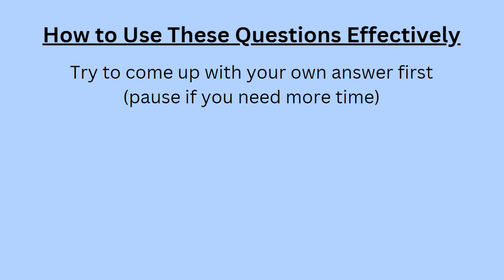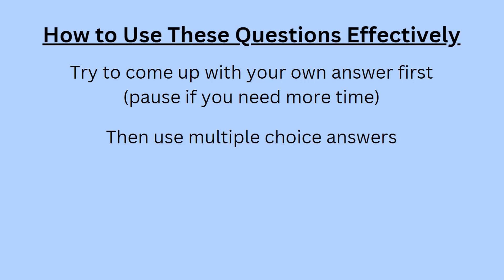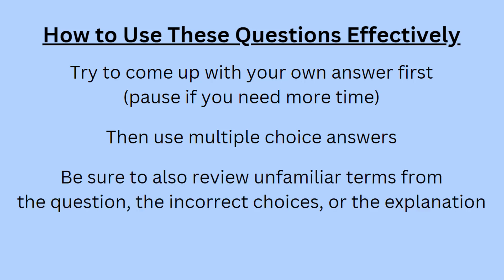One is to always try to come up with your own answer first. I'll pause after I read the question and before I show any of the multiple choice options, and you want to take this time to try to think of your own answers — you might want to pause the video to give yourself more time. Then you should use the multiple choice answers, but you should already have a sense of what you're looking for. Make sure that you also review any unfamiliar terms that appear in the question, in the incorrect answer choices, or in the explanation.